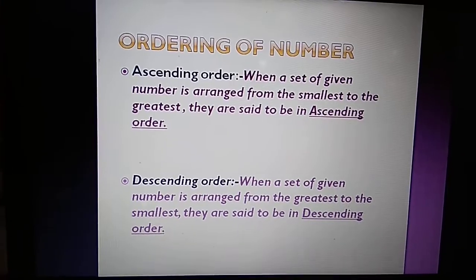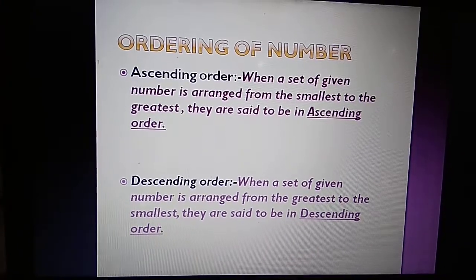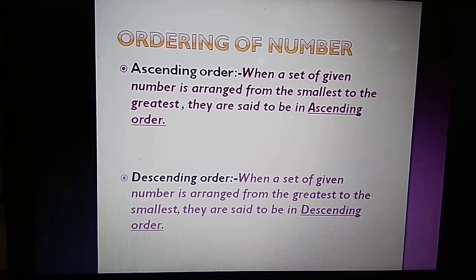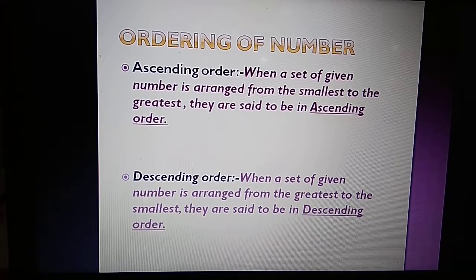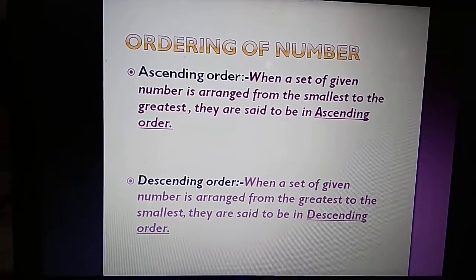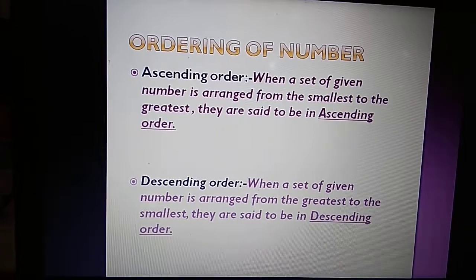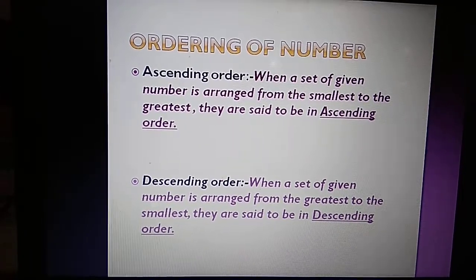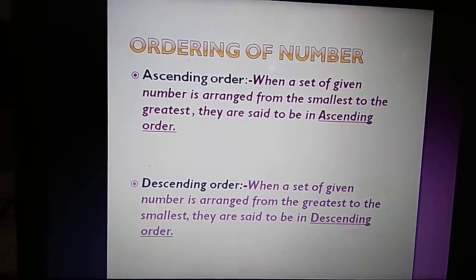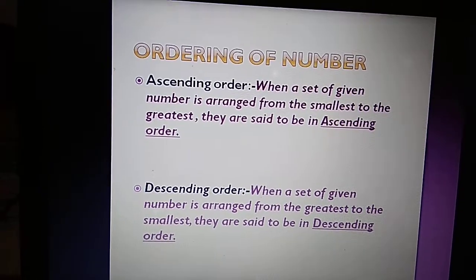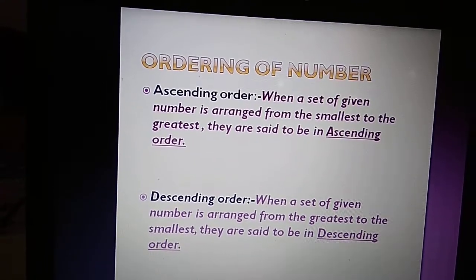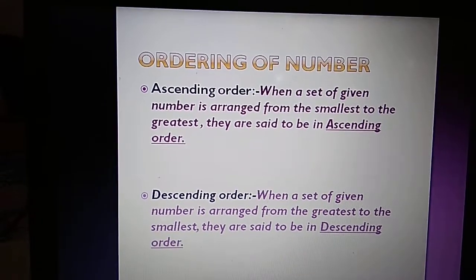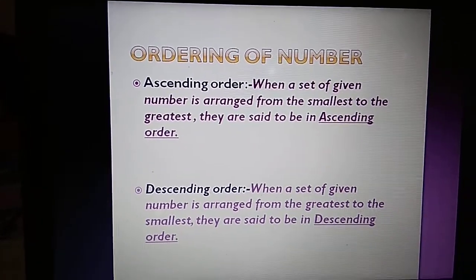Now we will study ordering of numbers, which means the arrangement of numbers from greater to smaller and smaller to greater. First, ascending order: when a set of numbers are arranged from the smallest to the greatest, they are said to be in ascending order. Second, descending order: when a set of numbers are arranged from the greatest to the smallest, they are said to be in descending order.